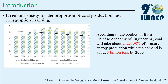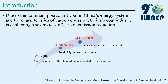This figure shows the annual production and consumption of coal in China. Overall, the decline is not obvious for the proportion of coal. It is projected that coal will take about under 50% of primary energy production, while the demand is about 3 billion tons by 2050. The coal industry in China is facing a severe task of carbon emission reduction.